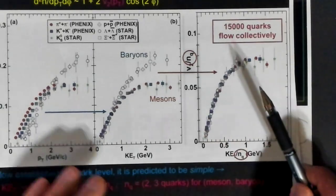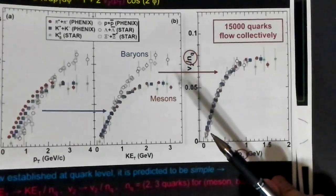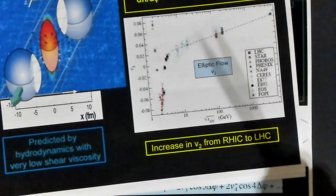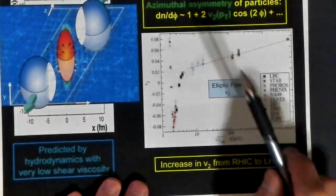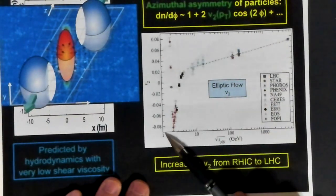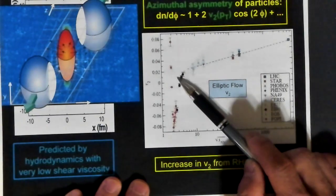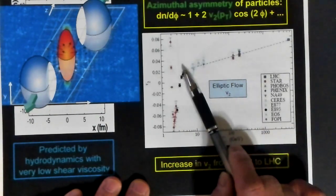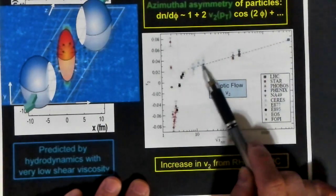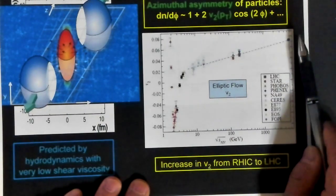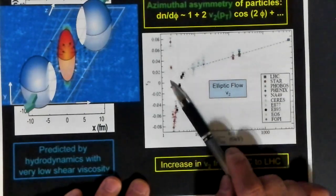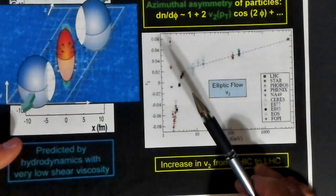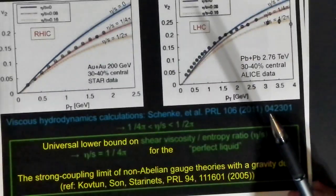We can then plot out this V2 as a function of the energy, and what you see is when you have sufficient amount of energy, you see this elliptic flow happening. The data over here is from the LHC, the data over here is from the RHIC, the Relativistic Heavy Ion Collider.